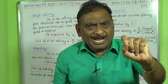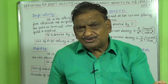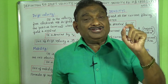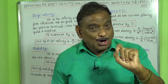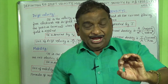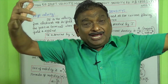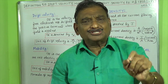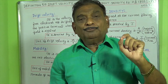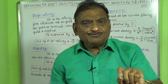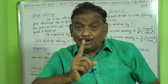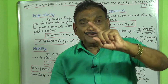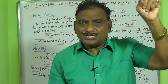The difference between drift velocity and mobility: in the case of drift velocity, any amount of electric field can be applied to drift the electrons towards the positive terminal. But in the case of mobility, one unit of electric field is used to drift the electrons towards the positive terminal.